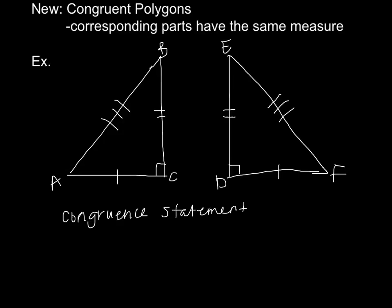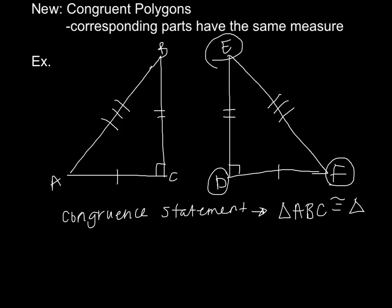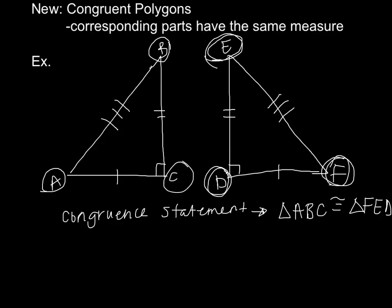Our congruence statement — how we write that these two triangles are congruent — is we would say triangle ABC is congruent to triangle FED. It does matter the order you put them in. If you're going to start here, then we have to start over here. Then you go up to the top, and then go by the right angle.